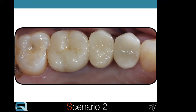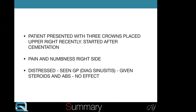Scenario two: a super-occluded restoration. This lady had three implant crowns fitted and presented with TMJ and acute symptoms. She had pain and numbness on the right side and was diagnosed with sinusitis, given steroids and antibiotics — none of which worked. But the history was really important: all her symptoms started as soon as the crowns were fitted.